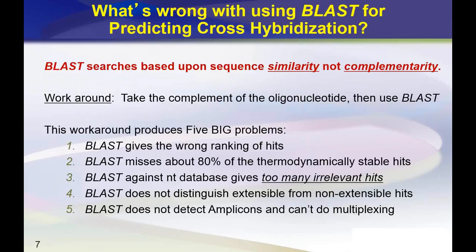Another problem with BLAST for determining cross-hybridization is that if you BLAST an oligonucleotide against a large database like NT, you get too many irrelevant hits. For example, if you were designing a primer against the human genome, that primer would likely hit other mammals like horse, pig, or cow — evolutionarily related but completely irrelevant to your primer design.